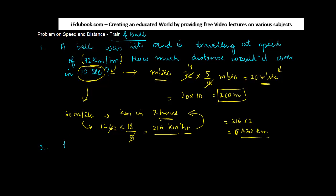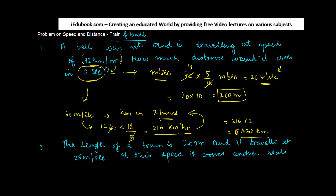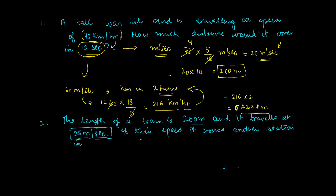The length of a train is 200 meter and it travels at 25 meter per second. At this speed it crosses another station in 20 seconds. Find the length of the station.